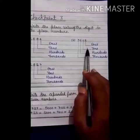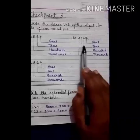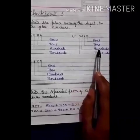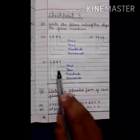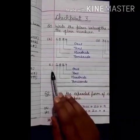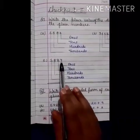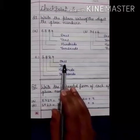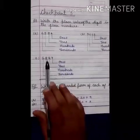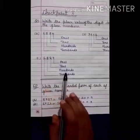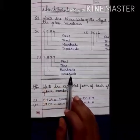Now B is 6602. So 2 is on the place of 1's, 6 is on the place of 10's, this 6 is on the place of 100's, and 3 is on the place of 1000's. Now C is 1827. So 7 is on the place of 1's, 2 is on the place of 10's, 8 is on the place of 100's, and 1 is on the place of 1000's.